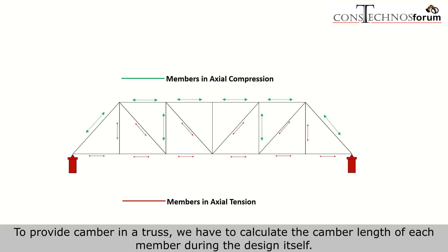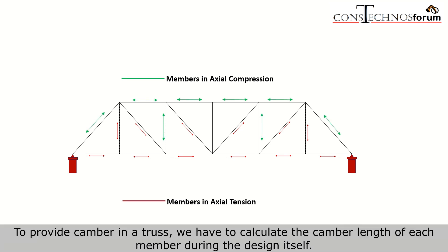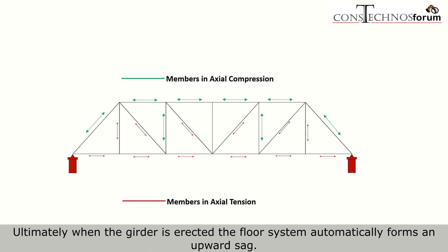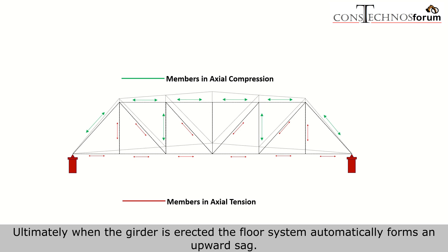To provide camber in a truss, we have to calculate the camber length of each member during the design itself. Ultimately, when the girder is erected, the floor system automatically forms an upward sag.